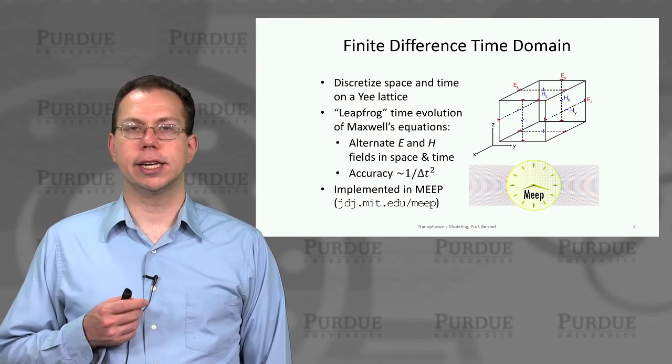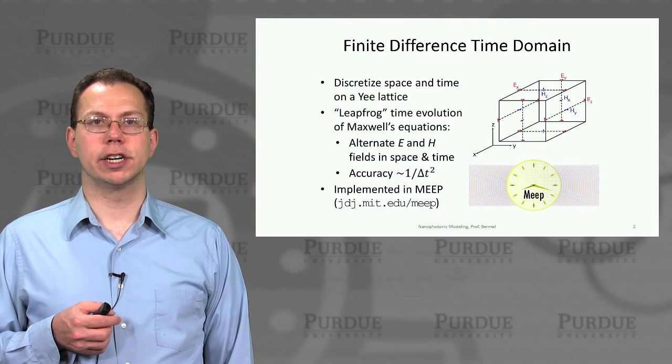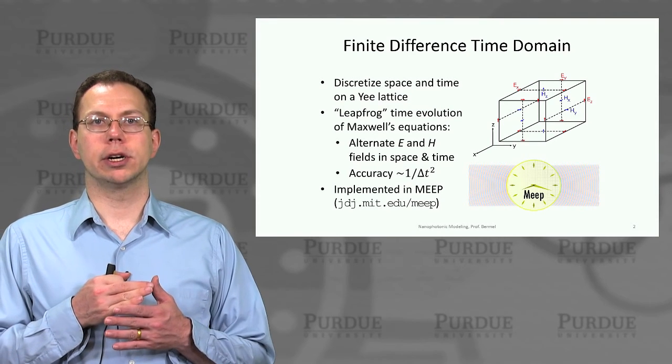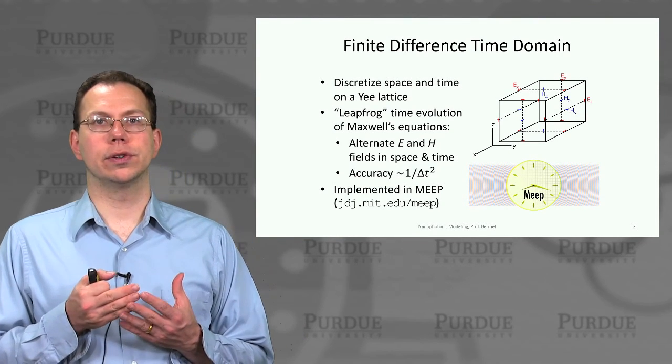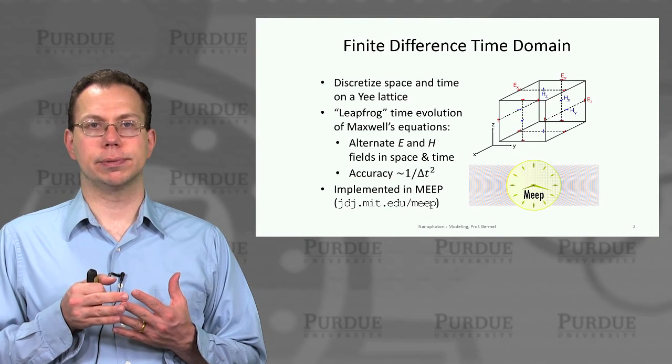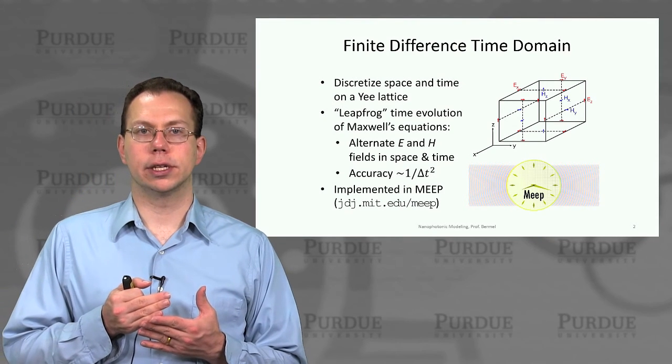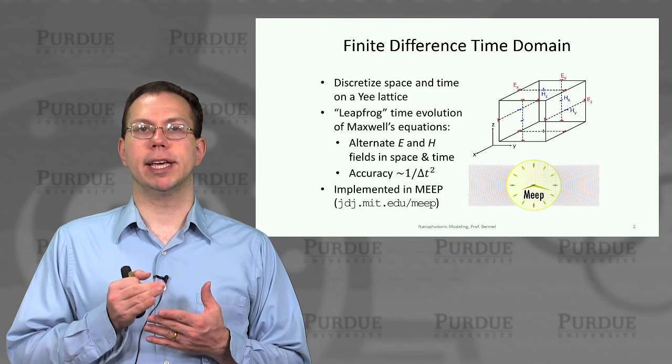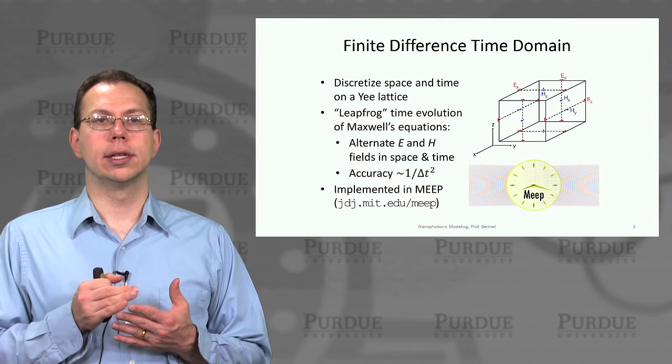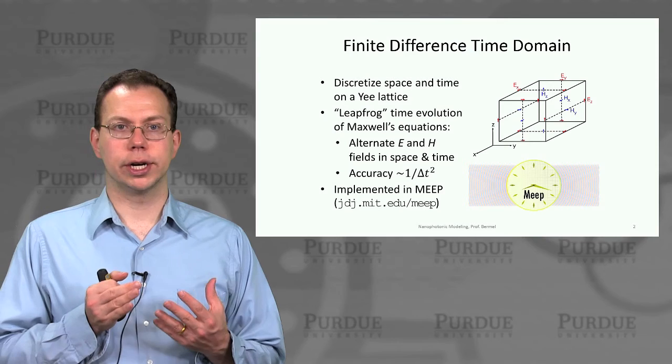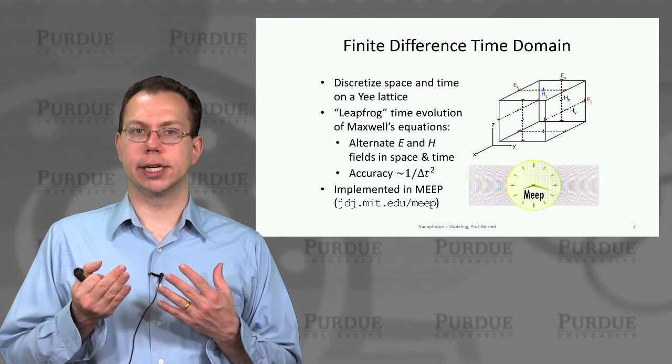So what is finite difference time domain? Basically the concept is very simple - we want to solve the actual electric and magnetic fields over time. Maxwell's equations give you explicit expressions for the time and spatial dependence of both electric and magnetic fields. The trick is to discretize time and space on a certain type of lattice called the Yee lattice, which gives us better accuracy than using just an arbitrary choice. Basically what this amounts to is what's called a leapfrog time evolution.